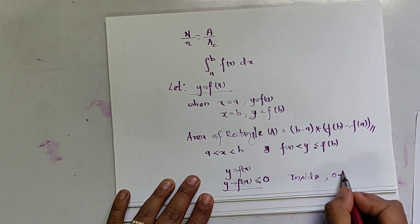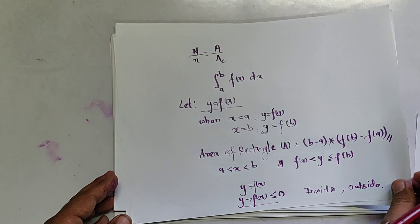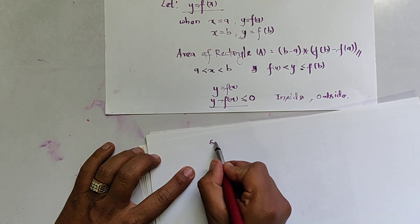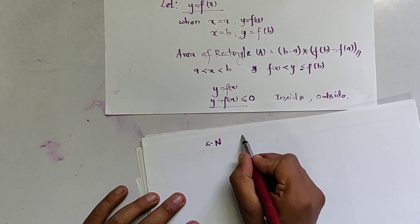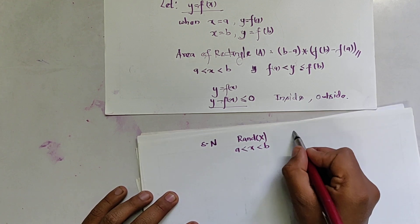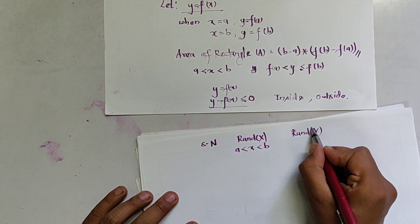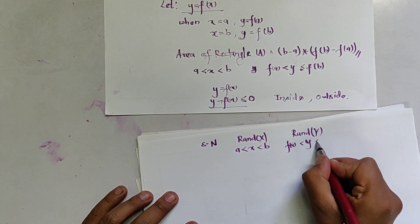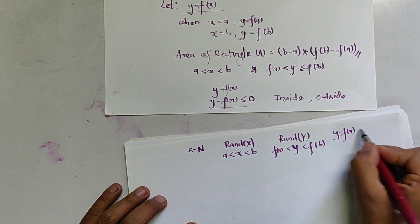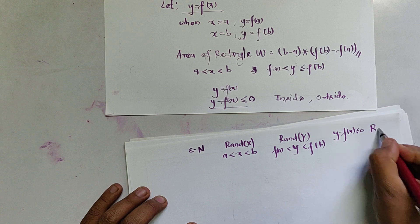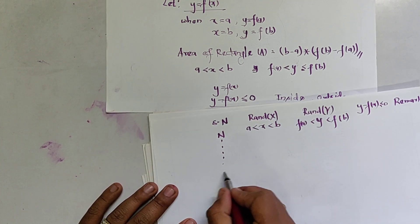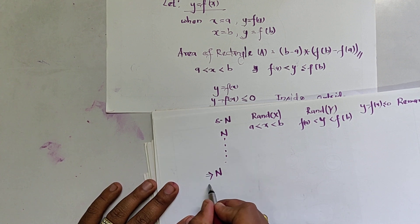Now we use this condition to generate the random numbers. Our table is structured as: serial number, random number x (which lies between a and b), random number y (which lies between f(a) and f(b)), and we check the condition y minus f(x) is less than or equal to 0. If true, we remark the point as 'in'; otherwise 'out'. We use N number of points total.